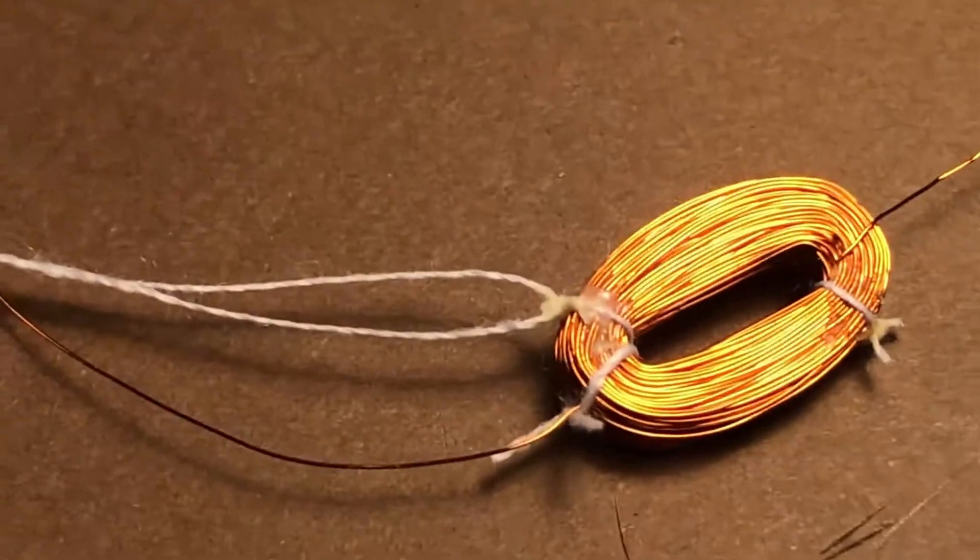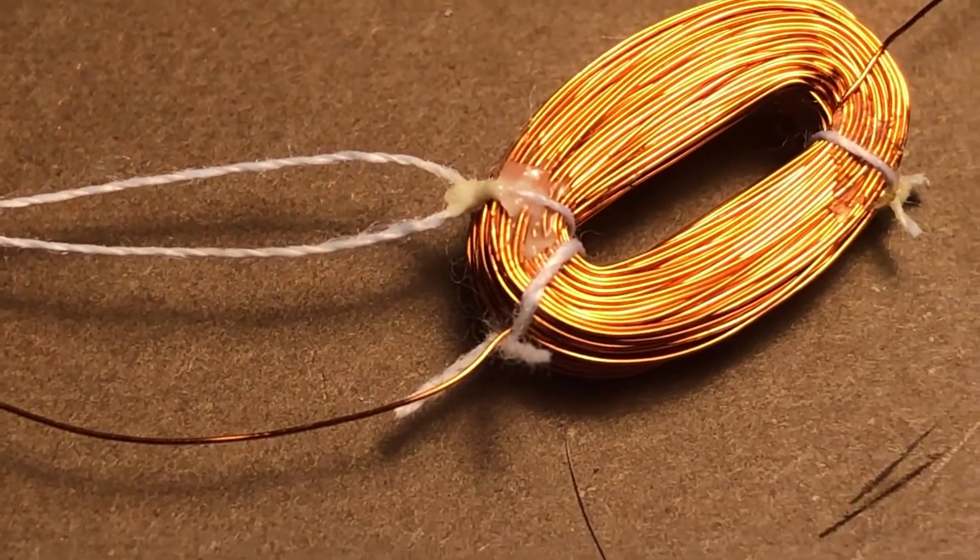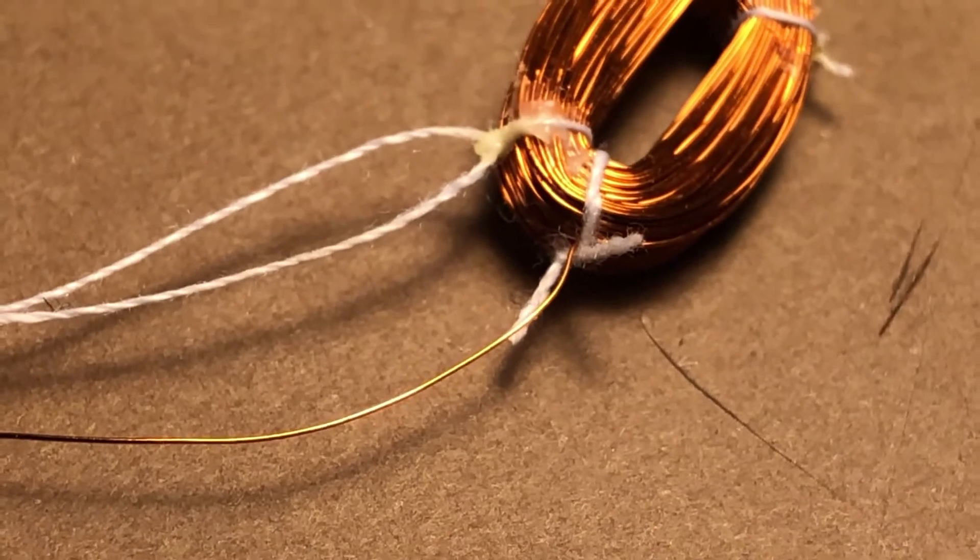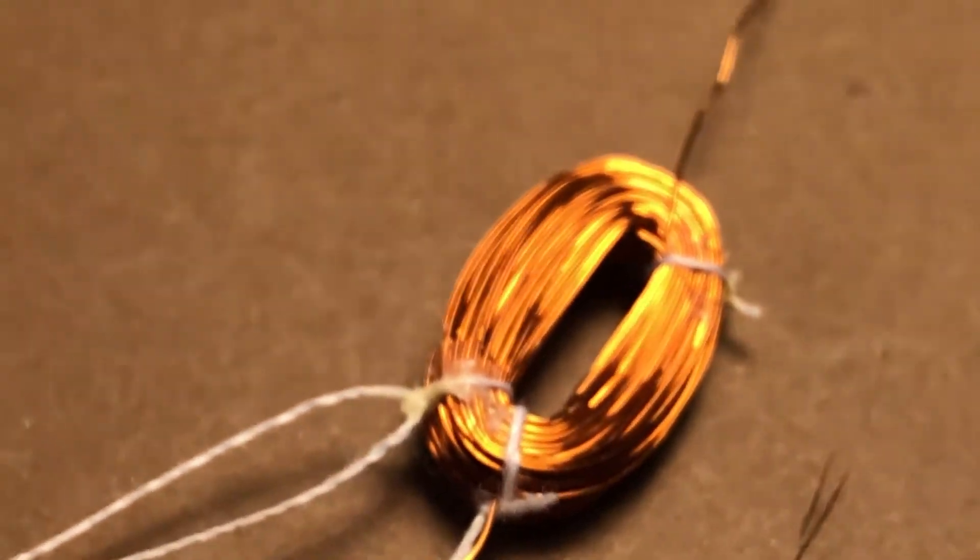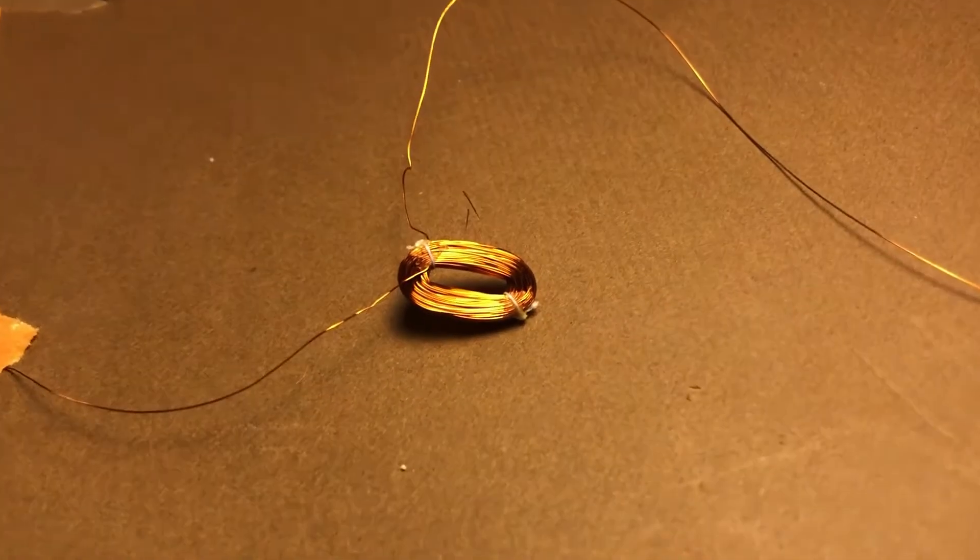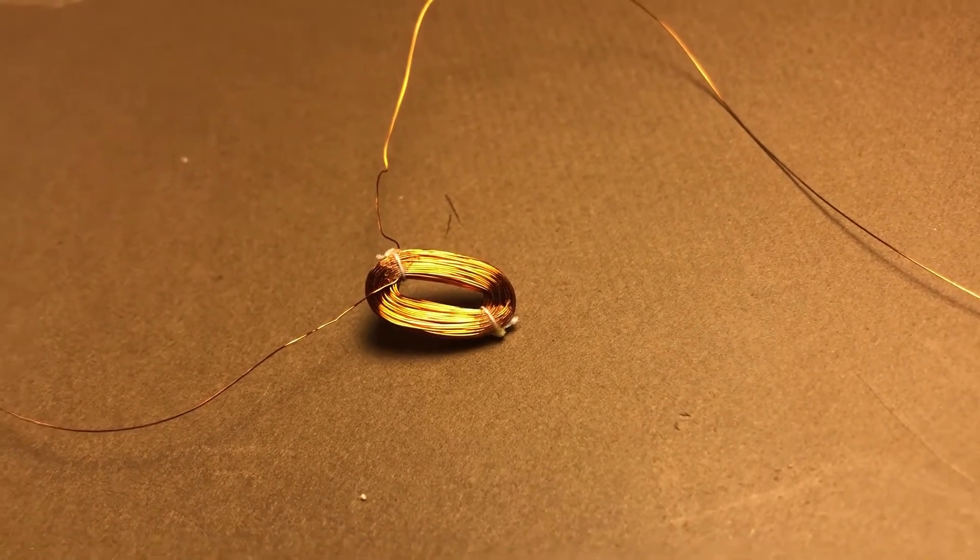There you go, now the second one is in and I triple tied it again. It's nice and tight. I'm going to go ahead now and trim the ends off and remove the original loose one and make both of the coil leads go onto the same side. There we go, so this will be just fine once I set it.